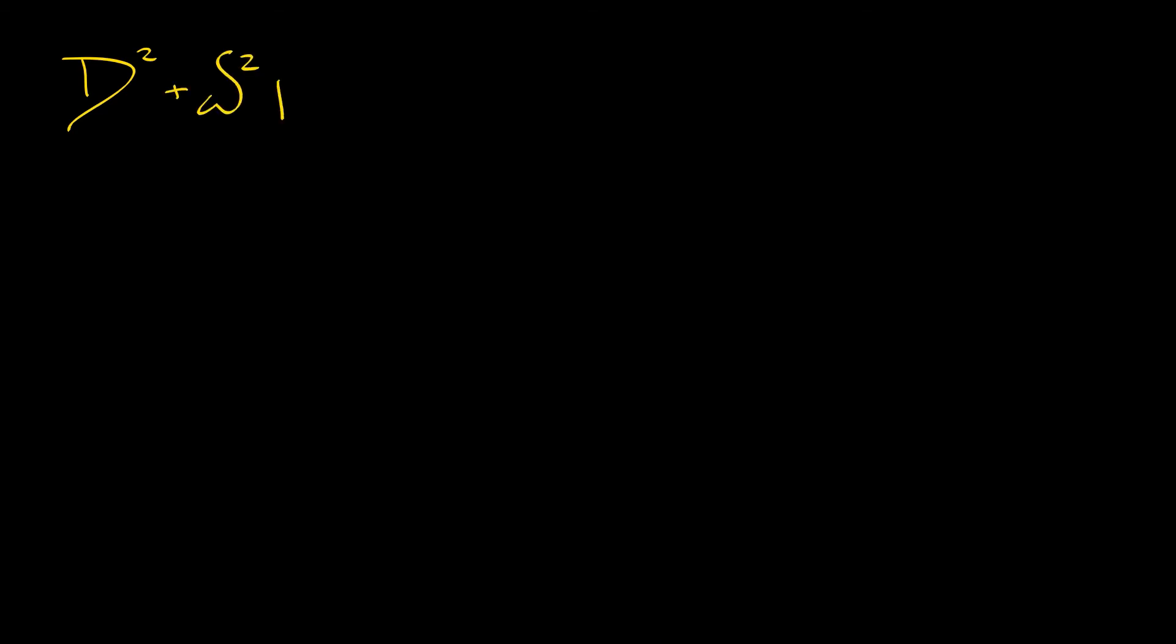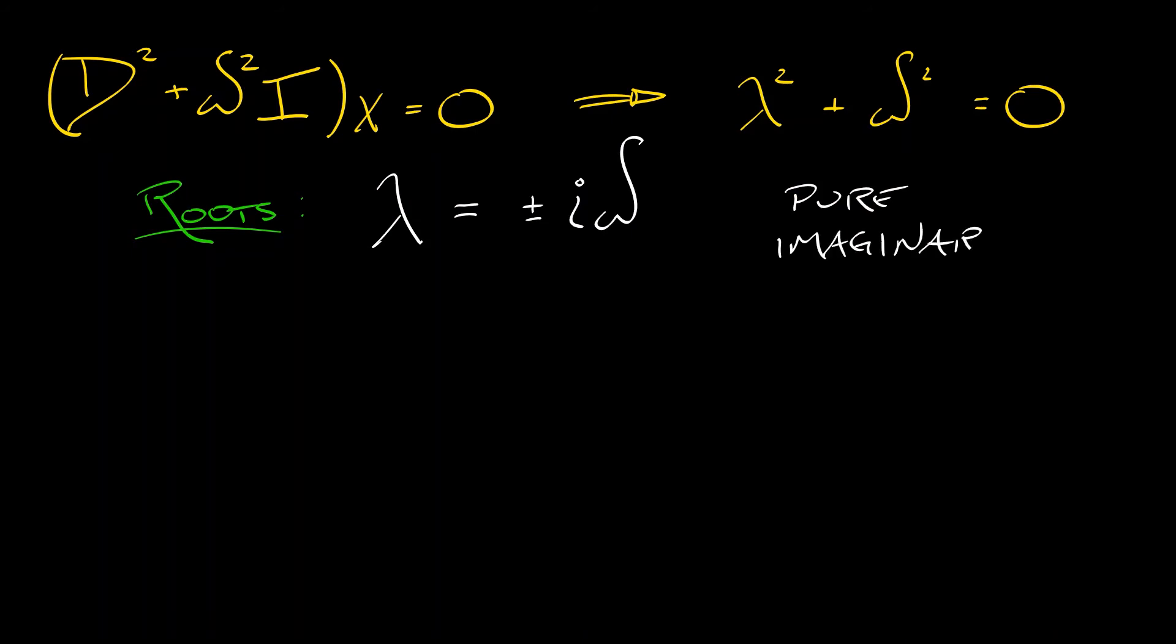So starting with that equation, we can very easily read off the characteristic polynomial as being λ² + ω² = 0. This has roots lambda that are plus or minus i omega. These are pure imaginary roots. And the real part is zero, which is really going to impact the form of the basis solutions.